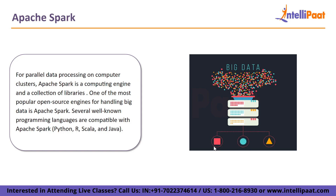The Apache Spark workers are distributed by the cluster management. An executor process is present in every worker. The driver process is in charge of managing the Apache Spark application progress, running the main function, responding to user input, and scheduling work among the executors. The executors are responsible for executing the tasks assigned to them and communicating the computation status back to the driver node.